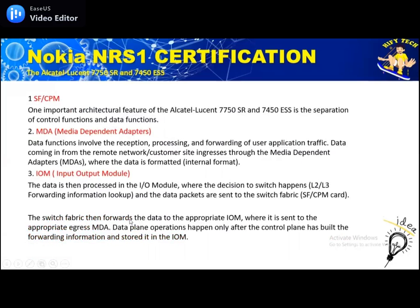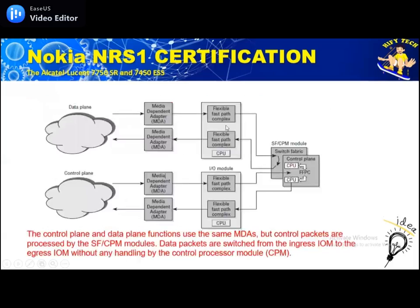The switch fabric forwards the data to the appropriate IOM, where it is sent to the appropriate ingress MDA. Data plane operation happens only after the control plane has built the forwarding information and stored it in the IOM. The control plane and data plane functions use the same MDA. The control packet is processed through the SF/CPM module — SF is for data and CPM is for the control module. Data packets are switched from the ingress IOM: MDA → IOM → SF for data, or → CPU for control plane.